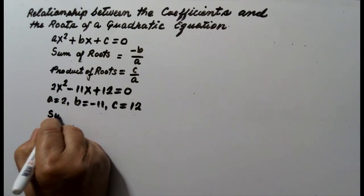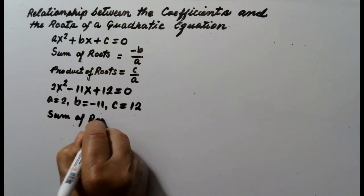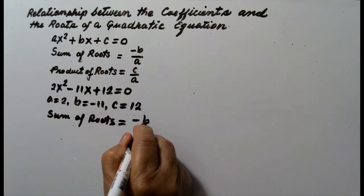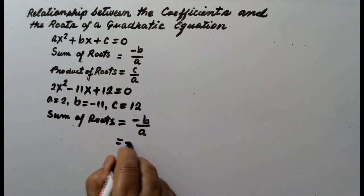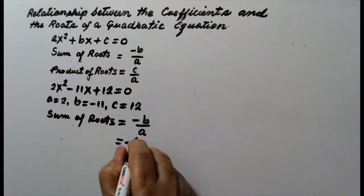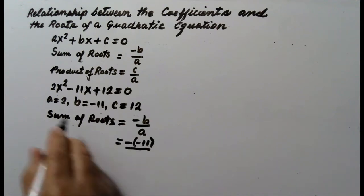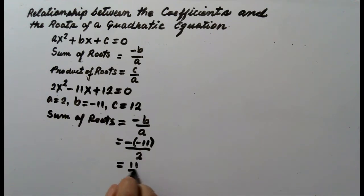The sum of the roots is equal to negative b over a, so this is equal to negative of b — b is negative 11 — over a, where a is 2. So this is negative negative, which is positive 11 over 2. So the sum of the roots is 11 over 2.